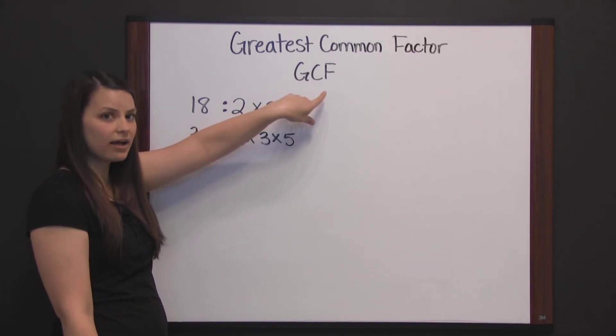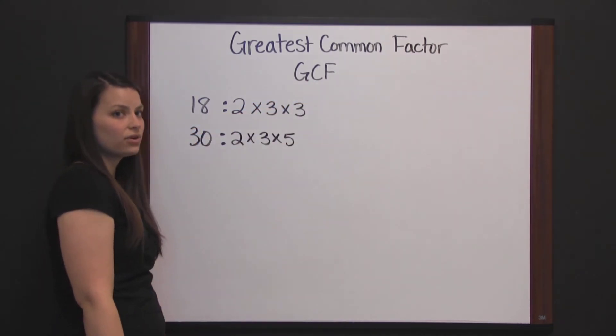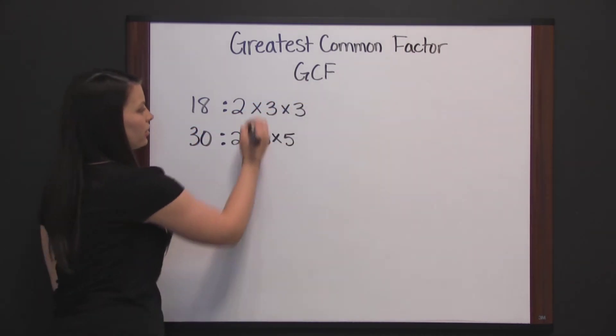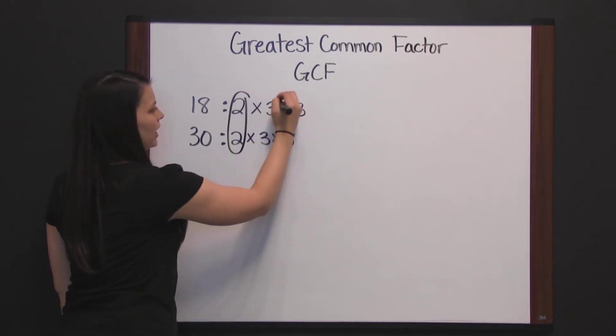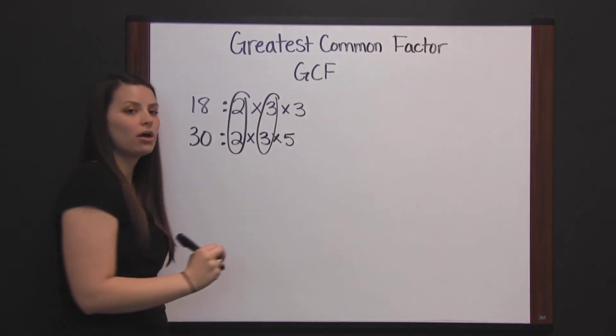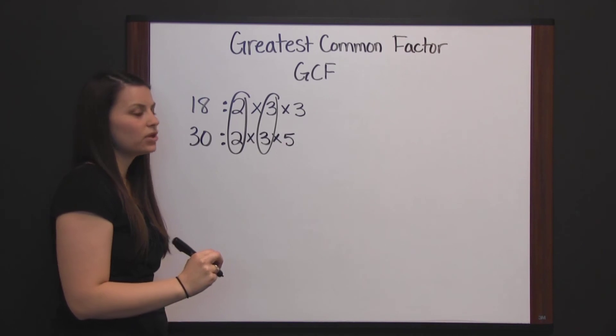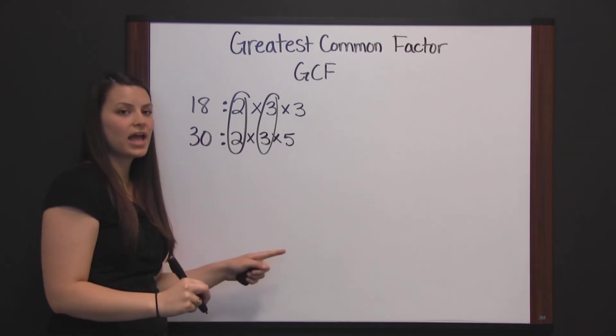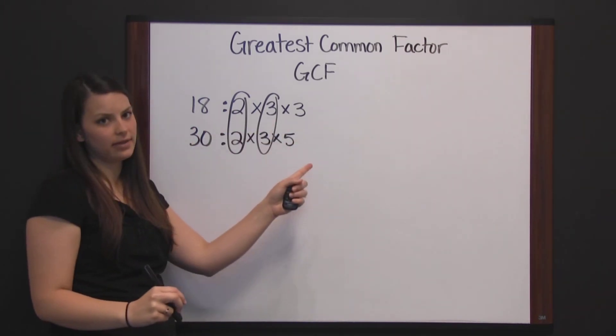Now again, to find the GCF, we're going to look for what they have in common. Eighteen and thirty have two and three in common as prime factors. So we take those factors they have in common and multiply them.